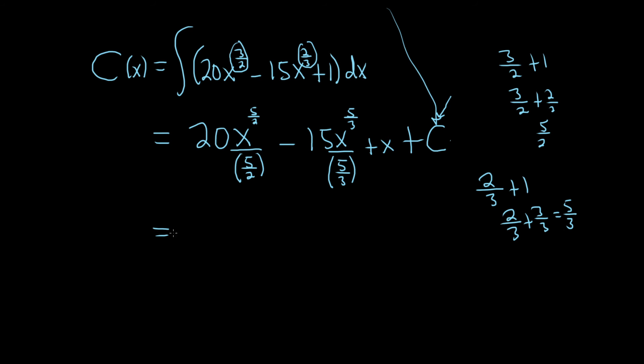Let's clean it up, though. When you divide by 5 halves, you really multiply by the reciprocal, so 2 fifths. So this is really 2 fifths times 20x to the 5 halves minus 3 fifths times 15x to the 5 thirds plus x. And we said the fixed costs are 4,000, that's going to be C. It's not changing, so it's our fixed cost.